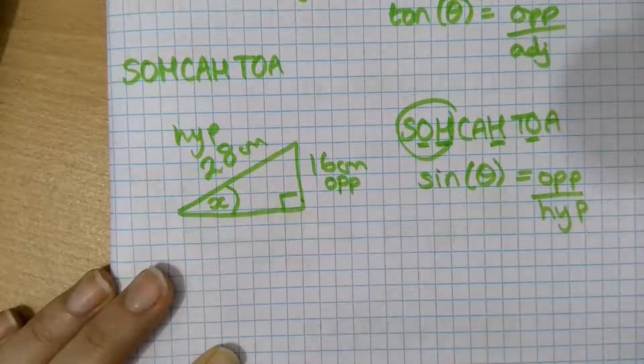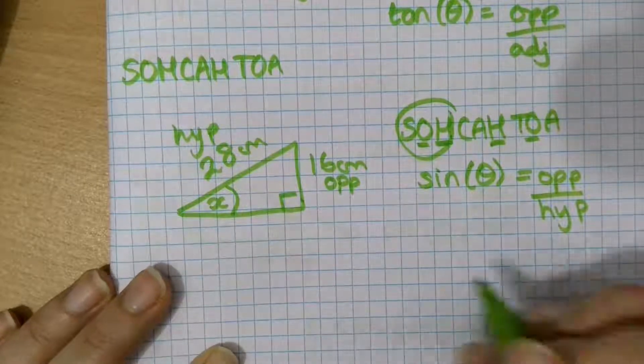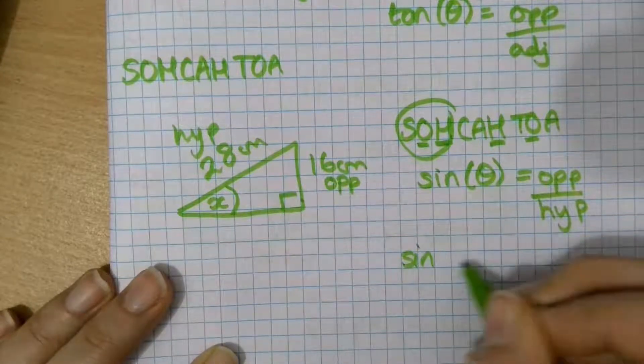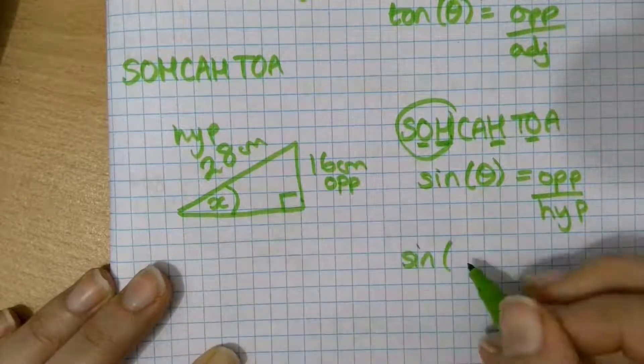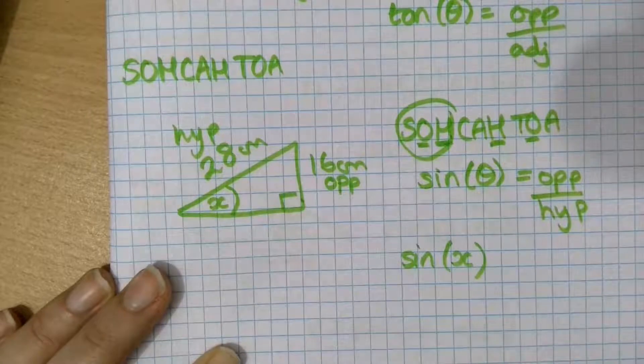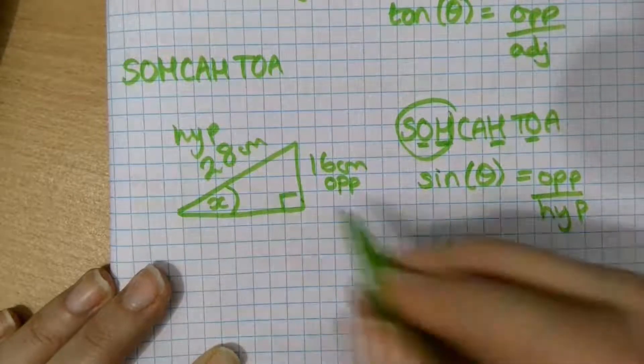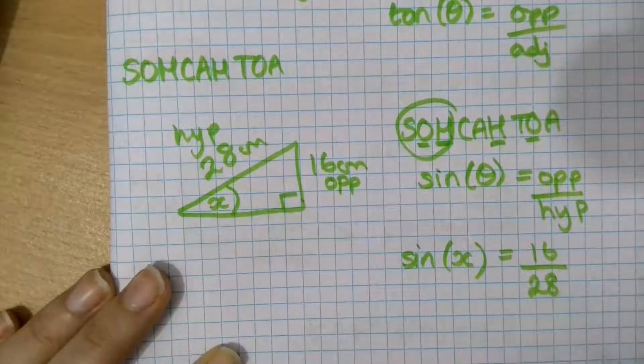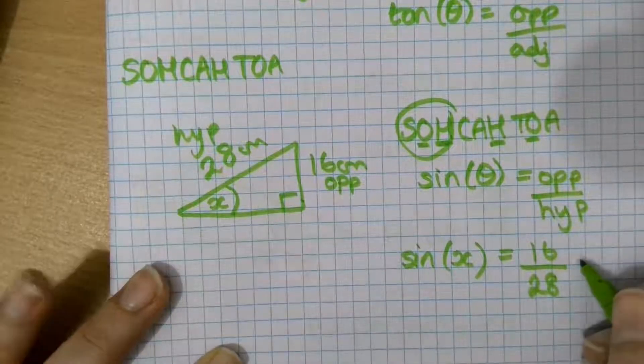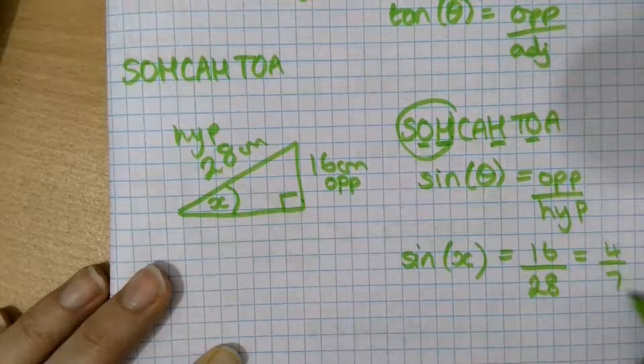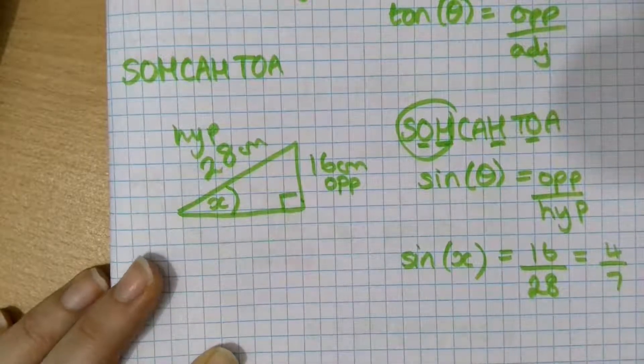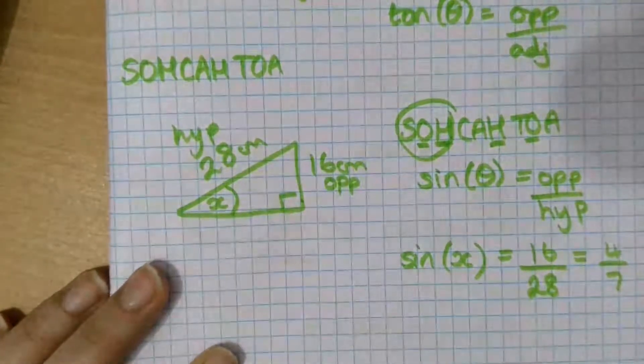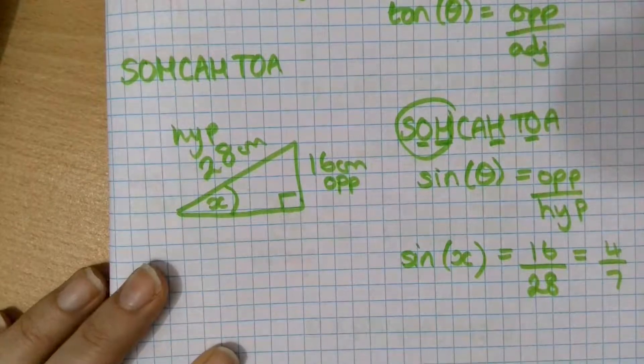Now we put our numbers in, that's the next step. The sine is the function. The angle is x. We don't know what it is, but we do know it's called x. The opposite side is 16. And the hypotenuse side is 28. At this point, you can sometimes simplify this fraction, which I can do here. But you don't need to do that. In the same way, you can also calculate that as a decimal. But you don't need to do that.